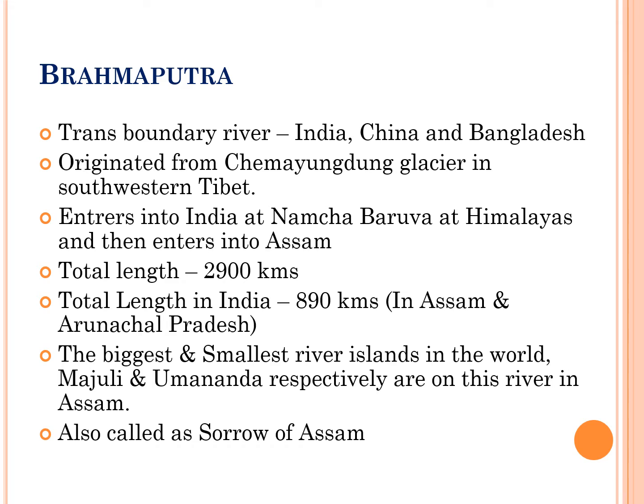The total length of the Brahmaputra river is 2900 kilometers. Out of this, the total length it flows in India is 890 kilometers, which includes Assam as well as Arunachal Pradesh state. The biggest river island in the world is on this Brahmaputra river, known as Majuli, and the smallest river island in the world is also on this river, known as Umananda.